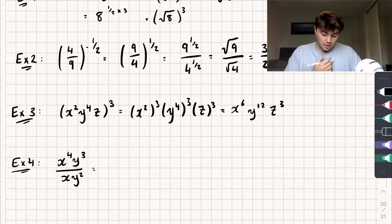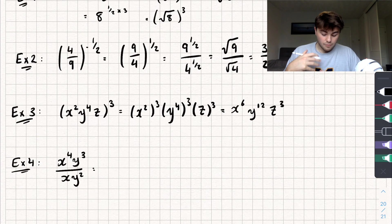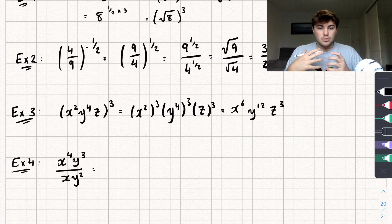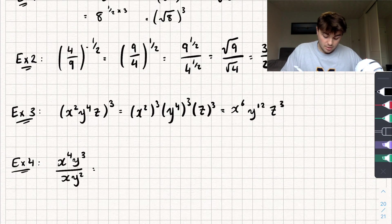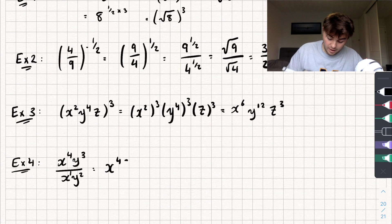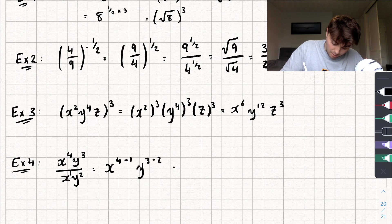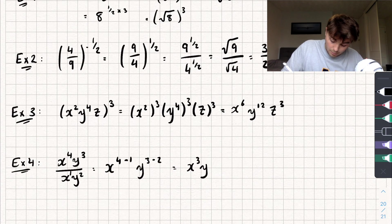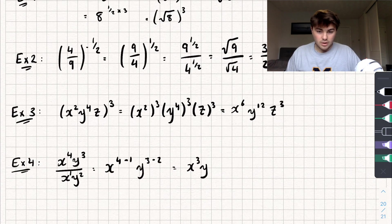Example 4: x to the power of 4 times y cubed, all over x times y squared. Using rule 2 and subtracting powers: for x, that's 4 minus 1 giving x to the power of 3; for y, that's 3 minus 2 giving y to the power of 1. So the answer is x cubed times y.